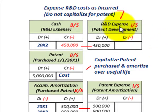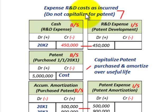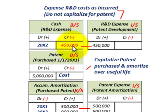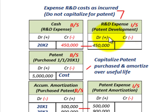Now let's look at how we'd record this patent on our balance sheet and income statement. The R&D costs are expensed as incurred — you do not capitalize them for the patent; those are strictly expensed. We had $450,000 in R&D expense related to this patent. We credit cash for $450,000 and debit research and development expense on the income statement for $450,000.